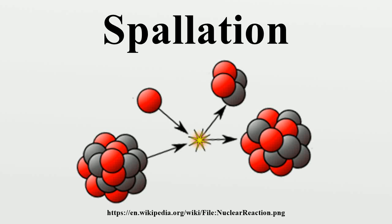Spallation is a process in which fragments of material are ejected from a body due to impact or stress. In the context of impact mechanics, it describes ejection or vaporization of material from a target during impact by a projectile. In planetary physics, spallation describes meteoritic impacts on a planetary surface and the effects of a stellar wind on a planetary atmosphere. In the context of mining or geology, spallation can refer to pieces of rock breaking off a rock face due to the internal stresses in the rock.